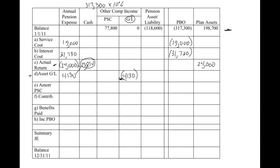The amortization of prior service costs is 3,480. Remember, that's a component of pension expense. So that goes there — it's an amortization, so we're expensing it and it increases the expense. If you get confused, remember if I'm amortizing a debit balance, I have to do it with a credit. So that's 3,480, because we should see that balance going down to zero.